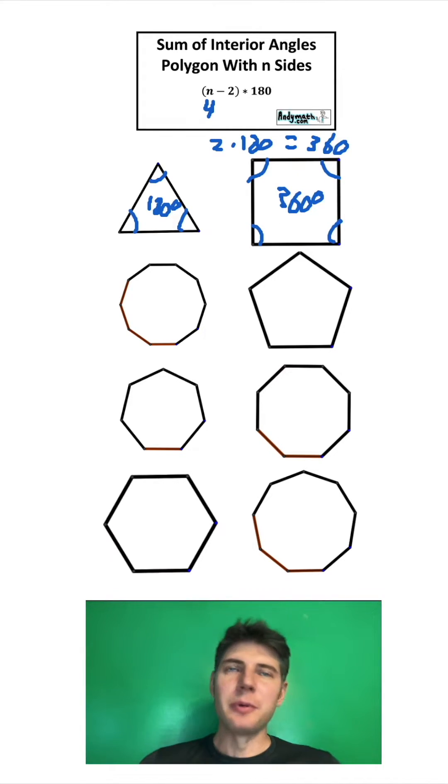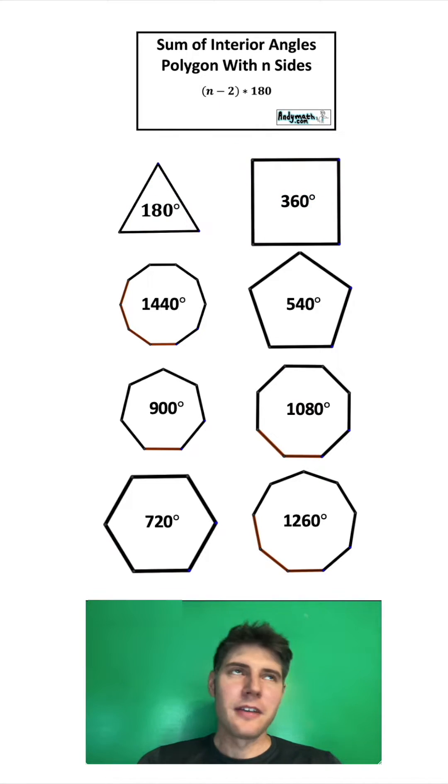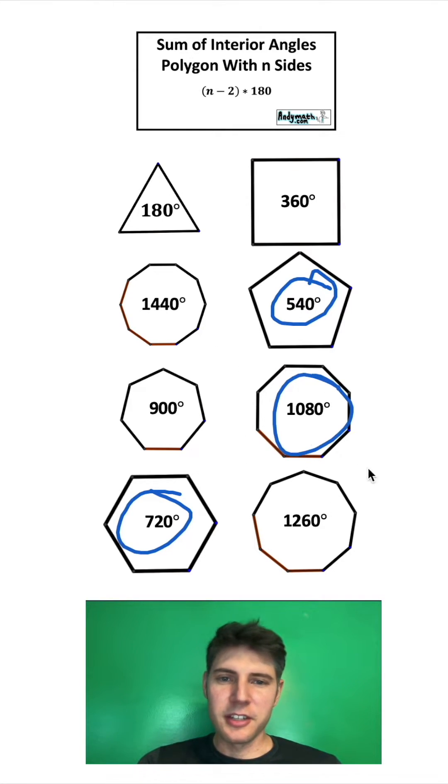We can repeat this for all the other polygons and find out the sum of all the interior angles for each of these shapes. The pentagon's 540, the hexagon is 720, an octagon's 1080, and so on.